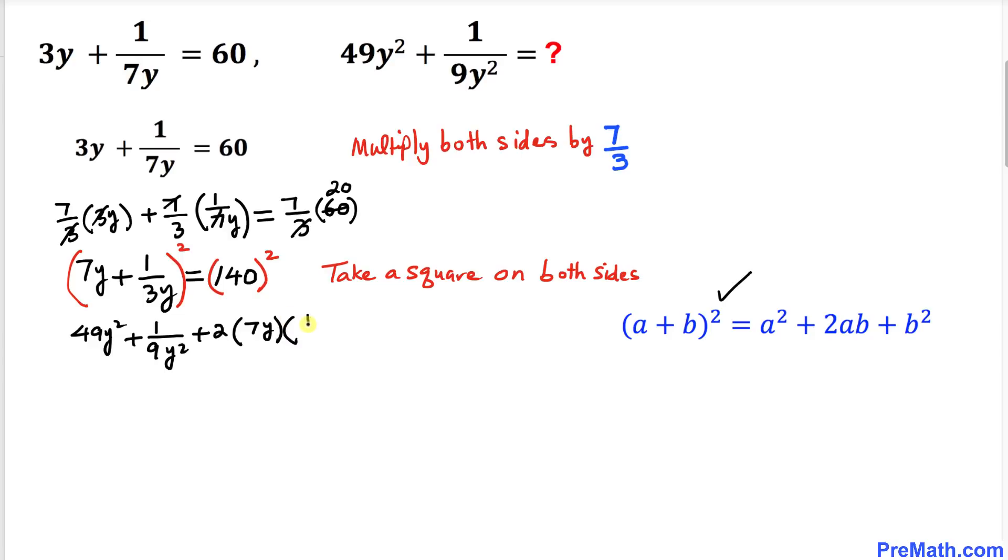This equals the square of 140, which is 19,600. Now let's simplify further. For the middle term, the y values cancel out, giving us 14/3. So we have 49y² plus 1/9y² plus 14/3 equals 19,600.